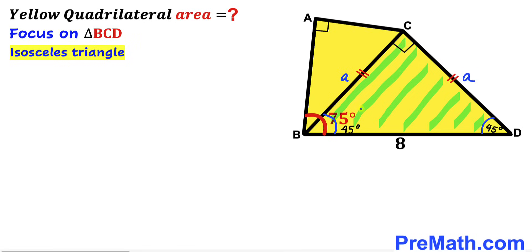Now let's make an observation. The whole angle ABD is 75 degrees and the base angle at B in triangle BCD is 45 degrees. So the remaining angle — angle ABC — has got to be 30 degrees.